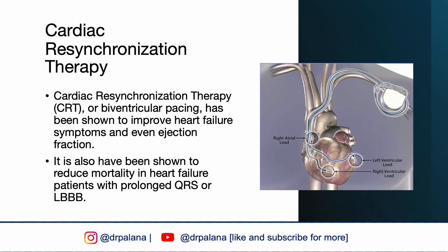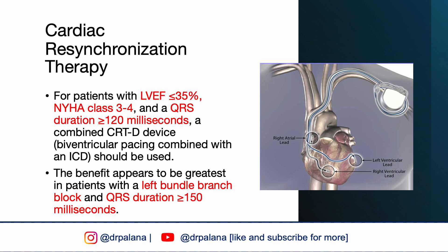When patients have a wide QRS, it indicates conduction system disease leading to asynchronous activation of the ventricles. Lack of synchrony between the right and left ventricles leads to inefficient cardiac function. Cardiac resynchronization therapy (CRT) involves implanting a pacemaker with both RV and LV leads, simultaneously pacing both ventricles for more synchronous contraction. This has been shown to improve outcomes particularly in patients with a very wide QRS of at least 150 milliseconds in a left bundle branch pattern.